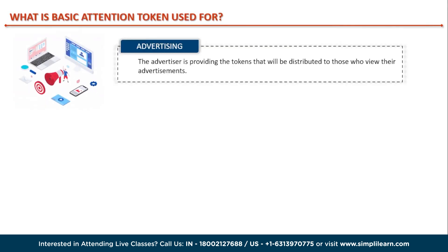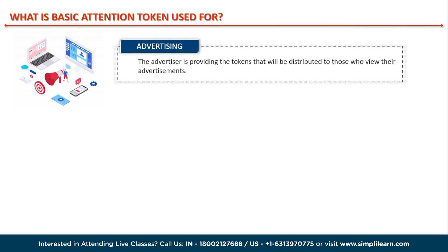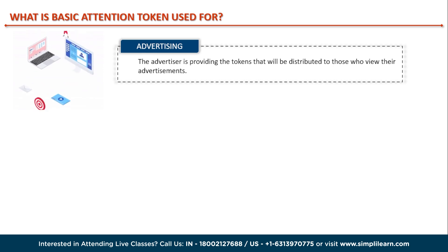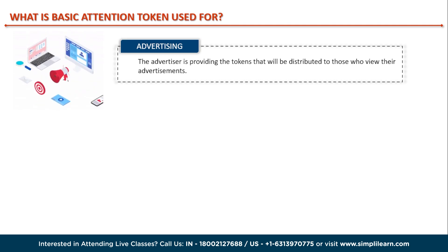First is Advertising. The advertiser provides the tokens that will be distributed to those who view their advertisements. Users who choose to participate in BAT rewards are also a part of this advertising ecosystem. They are compensated with tokens for each advertisement they watch, based on the amount of time and attention they devote to it.